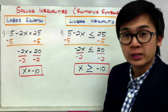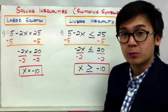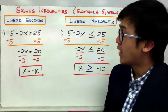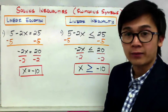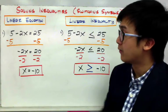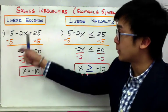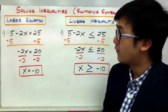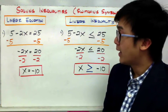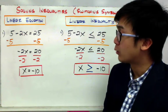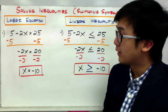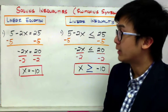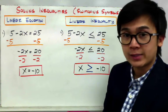When do you switch your inequality symbol? Let's say I have 5 minus 2x equal to 25, a linear equation because of the equal sign. To get rid of 5, I subtract 5 on both sides, giving me negative 2x equal to 20. Then I divide by negative 2, leaving me with x equal to negative 10. In a linear equation, we're finished once we have x by itself.